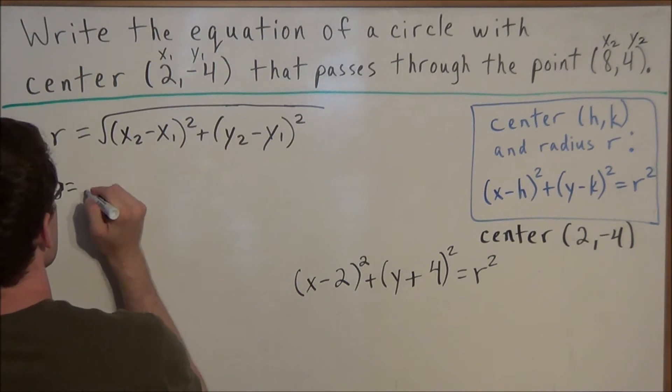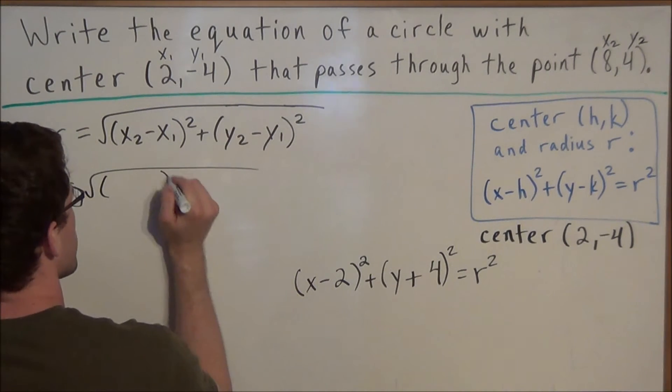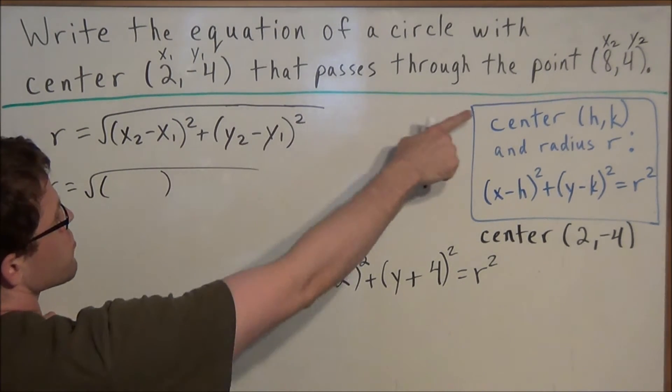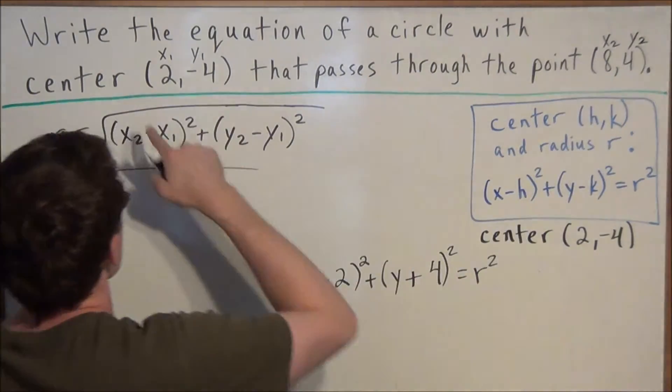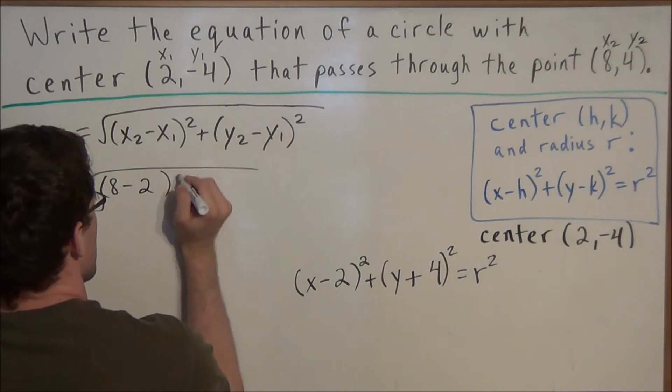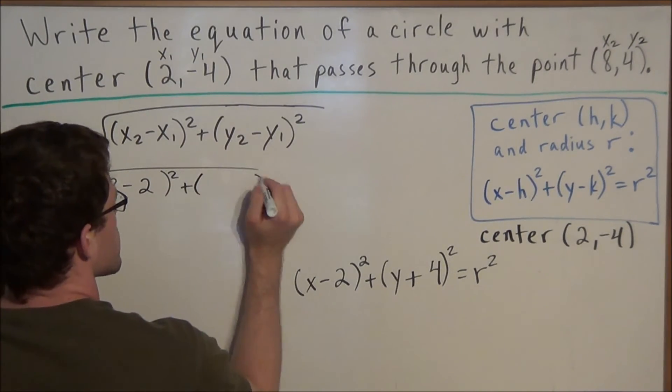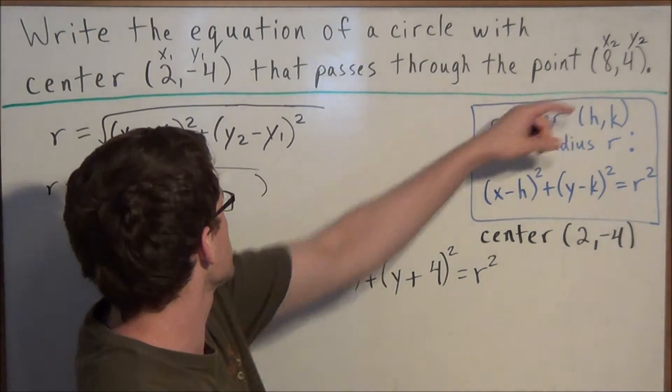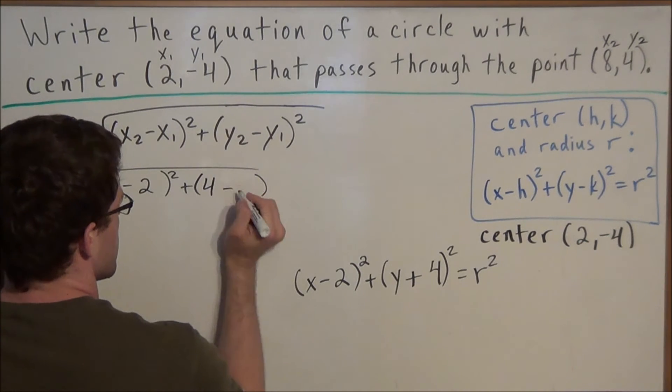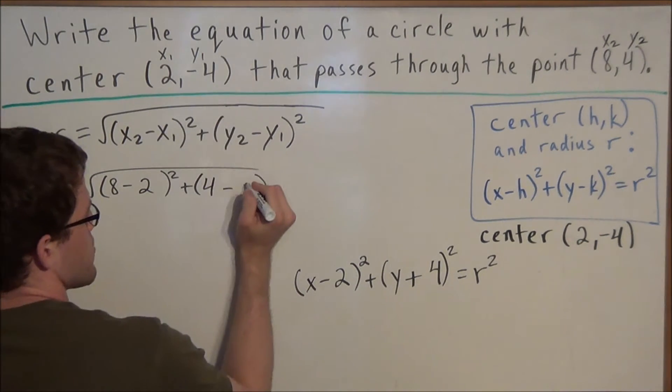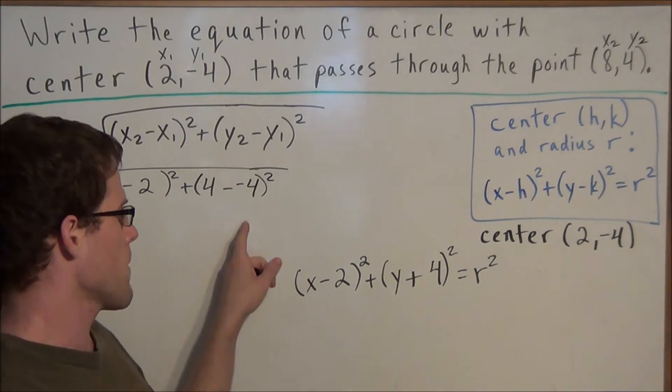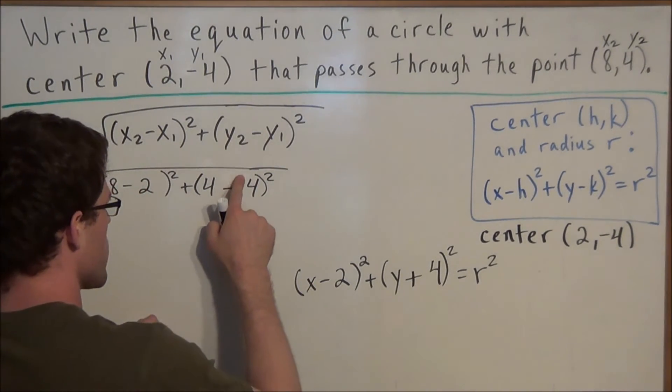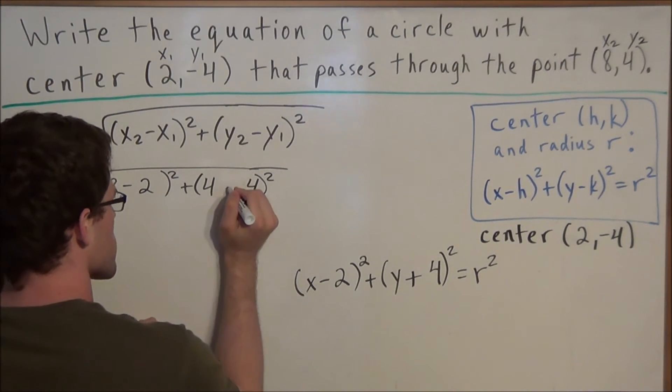So our radius is equal to the square root of, and now we've got X2 minus X1. So we have 8 is our X2 minus 2 squared plus, and now we've got Y2 is 4 minus, don't forget the second negative. We've got 4 minus negative 4 squared here like this. But remember when we have a minus minus that's going to change to a plus. So right away in this step here we can just say that this is plus.